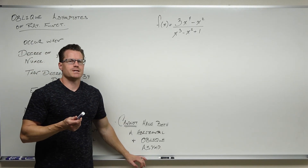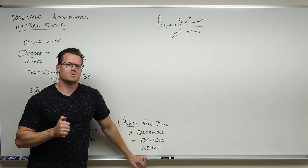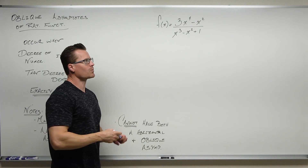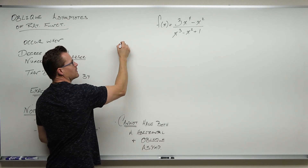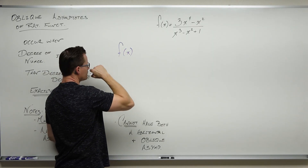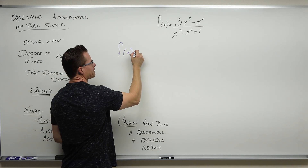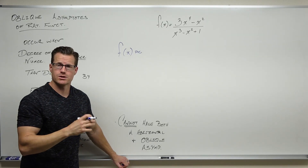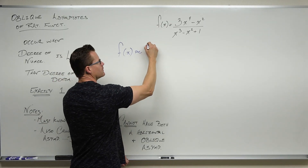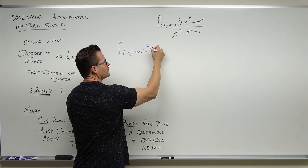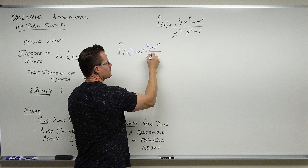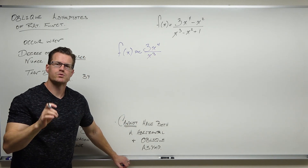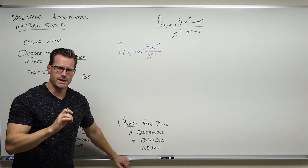We do something different with an oblique asymptote than with other end behaviors. Normally we take a look at leading terms, and because leading terms are always power functions, the variables will always simplify. Our end behavior is going to be modeled by our leading terms — we studied this in the last video.